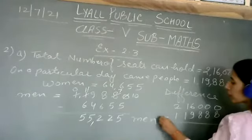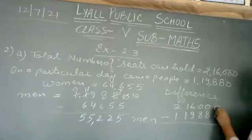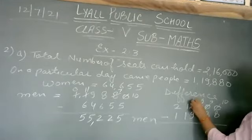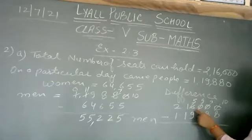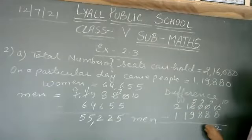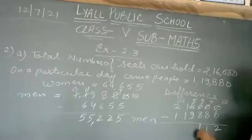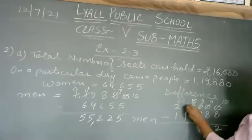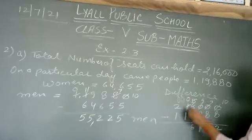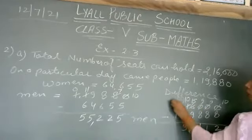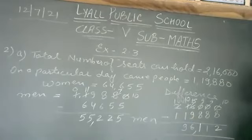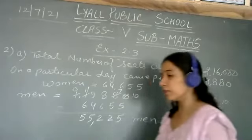Subtracting 1,19,880 from 2,16,000: 0 minus 8 — cannot subtract, borrow; we get 10, 9, 9, 12 through borrowing. 10 minus 8 is 2; 9 minus 8 is 1; 9 minus 8 is 1; 5 minus 9 — cannot subtract, borrow: 15 minus 9 is 6; 1 minus 1 is 0. So 96,120 seats were vacant.